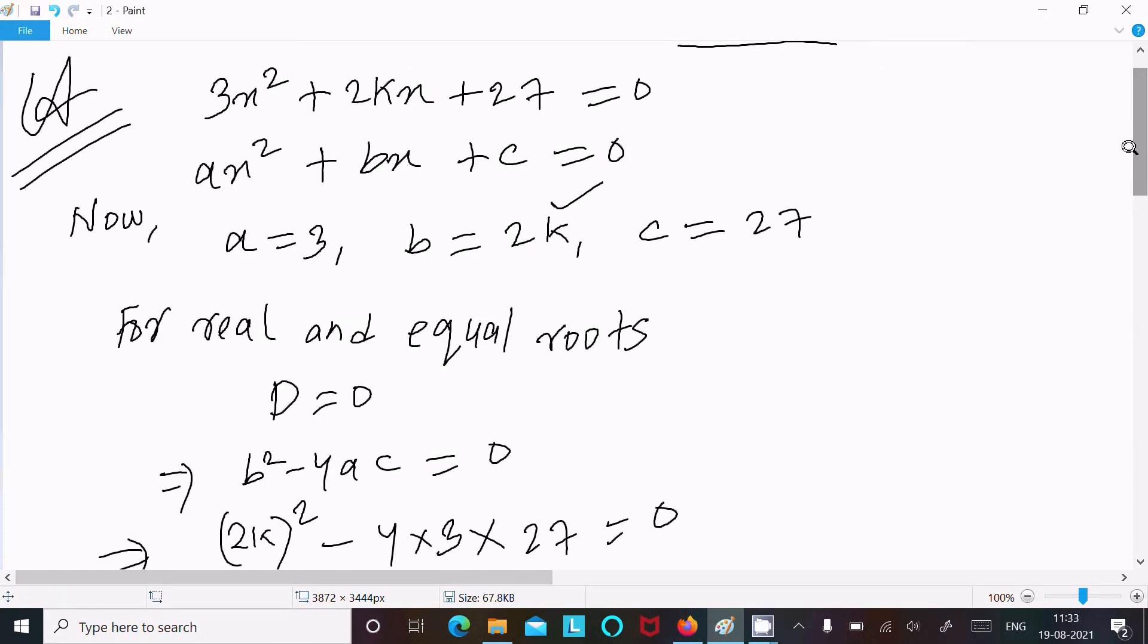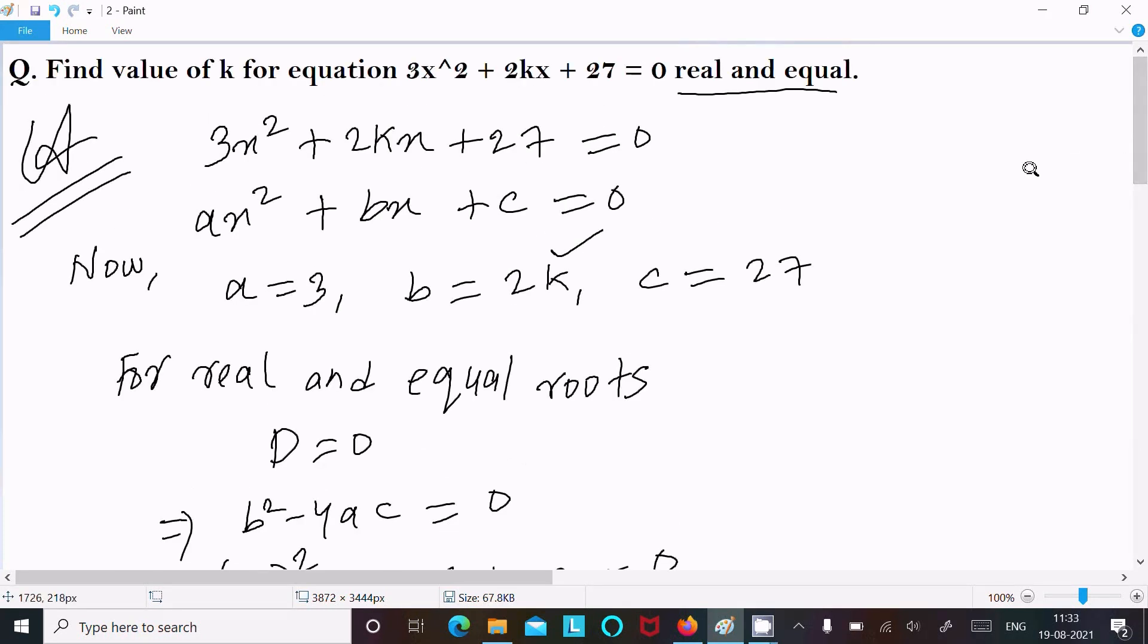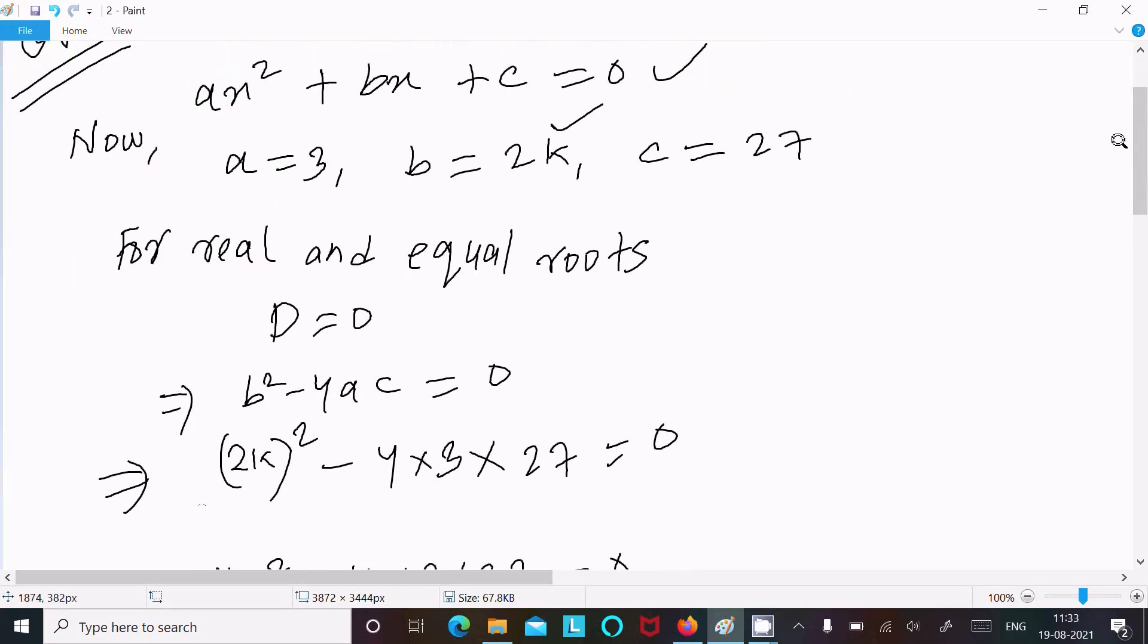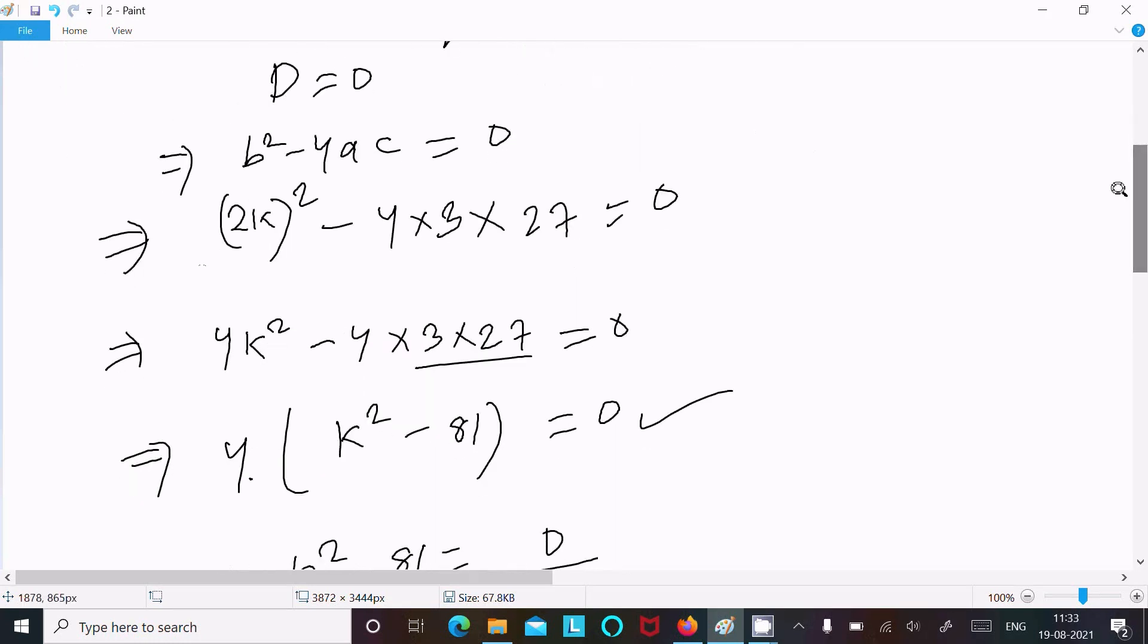To repeat: write the equation, compare with the general form of quadratic equation to identify a, b, c. For real and equal roots, D = 0. Put the value of D: b² - 4ac. Put the values of b, a, c and calculate k.